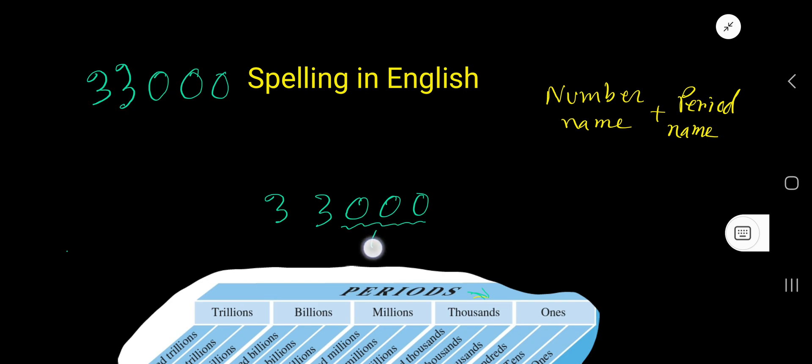The name of the first period is ones period. After ones period, we will get thousands period. You can use a comma to separate ones period from thousands period. So the number name is 33.